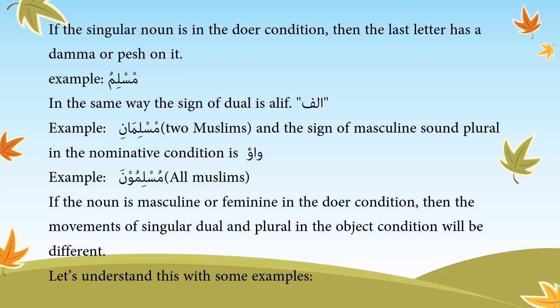If the singular noun is in the nominative condition, then the last letter has a damma (pesh) on it — example: muslimun. The sign of dual is alif — example: muslimani (two Muslims). The sign of masculine sound plural in the nominative condition is waw — example: muslimuna (all Muslims).